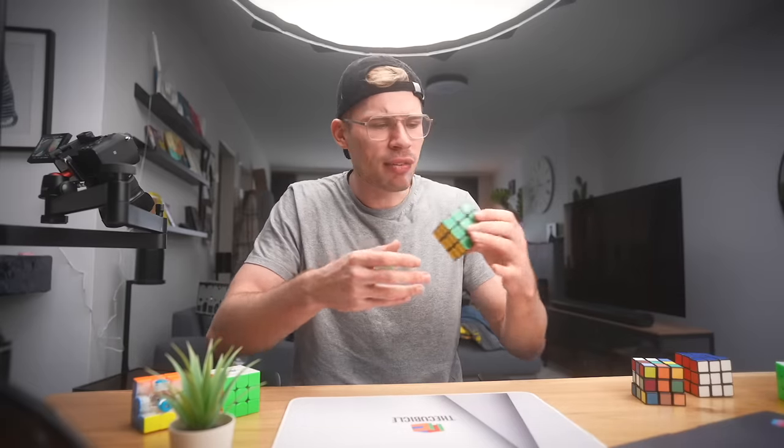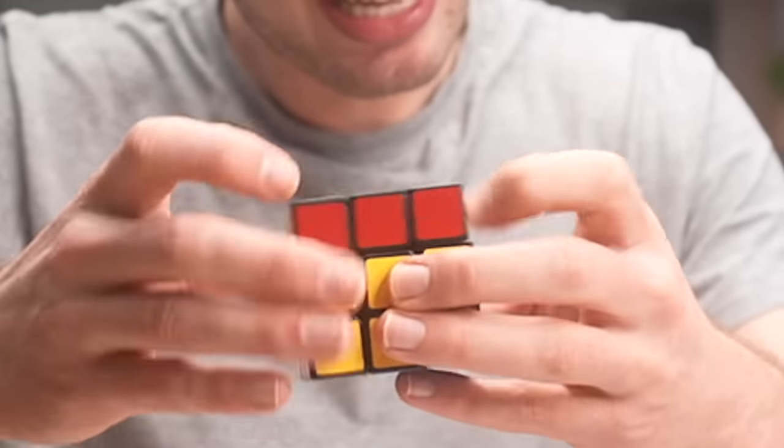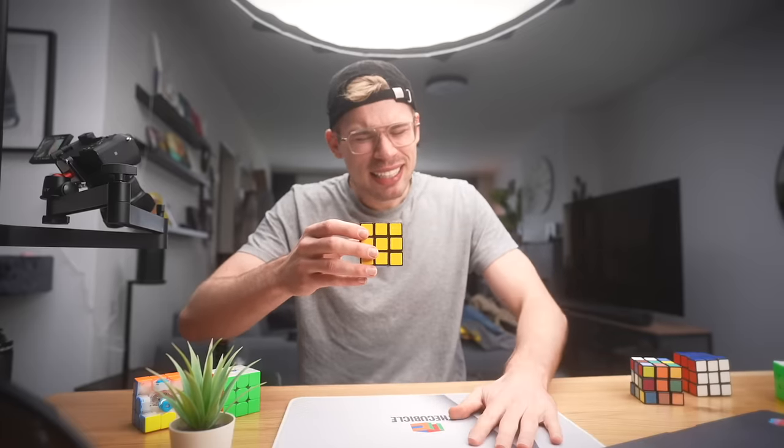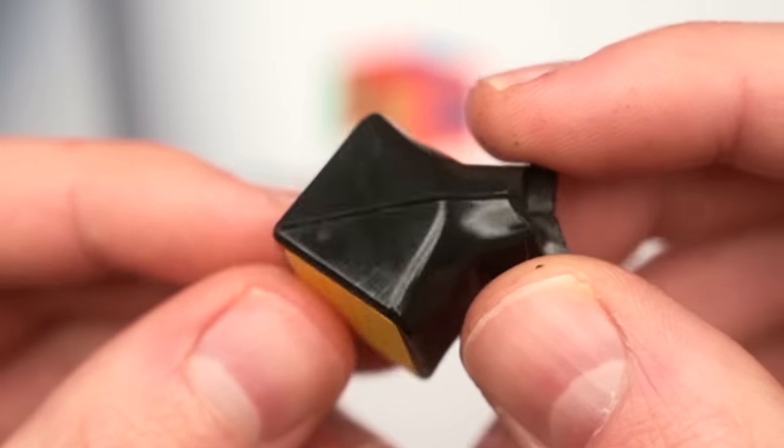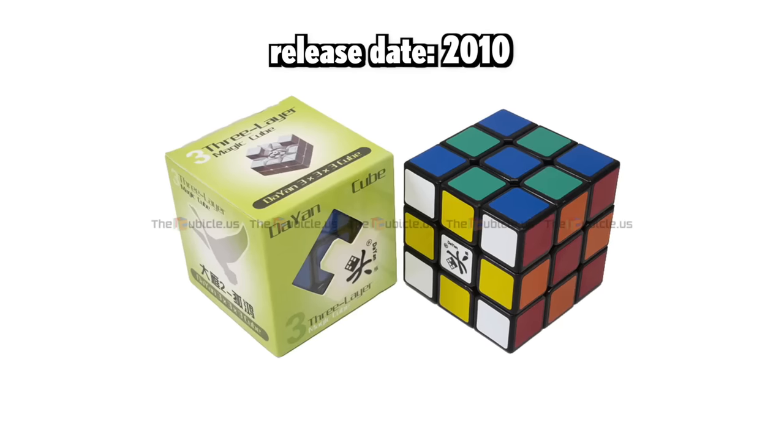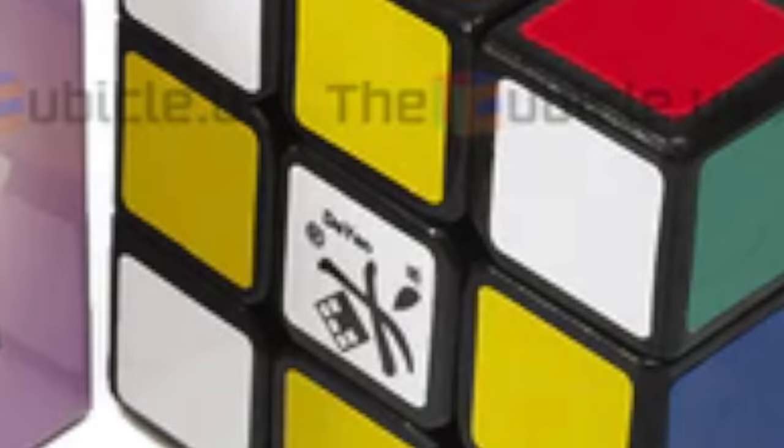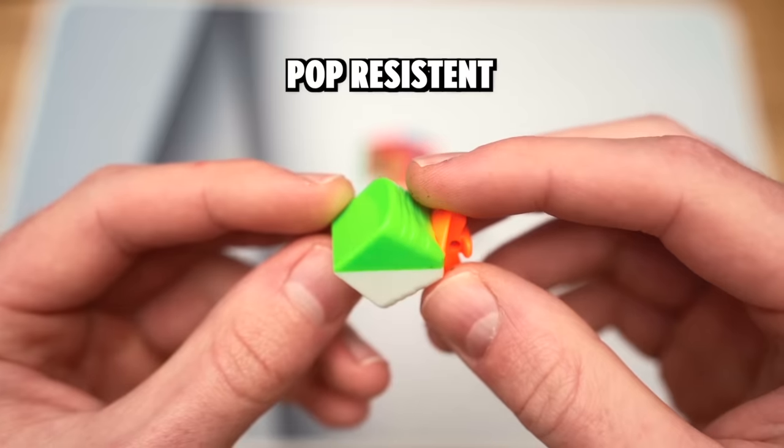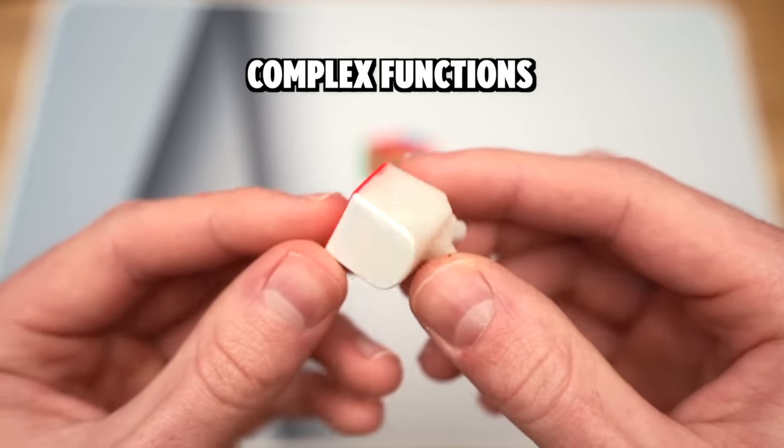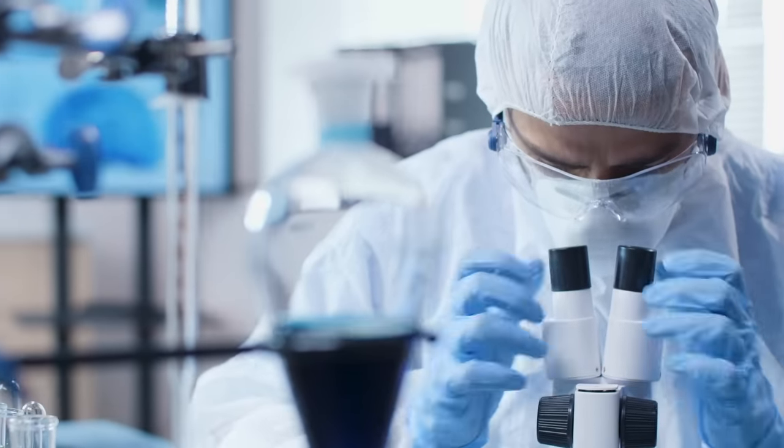And the first step in cubing innovation is just an overall better design of the cube. The first improvement for the first speedcubes was an overall smoother design. You could find this, for example, with the OG Dian Guhong. What a beast. But smoother piece design wasn't everything. So that's why every new iteration of a speedcube just improves the performance by experimenting with different types of pieces.